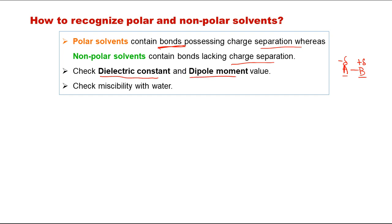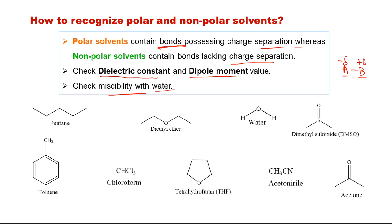We can recognize polarity from dielectric constant and dipole moment values — if these two are high, it will mostly be polar. But a simpler way that works in most cases is to check miscibility with water. If a solvent is miscible with water, it is considered polar; if not, it is non-polar, though there are some exceptions.